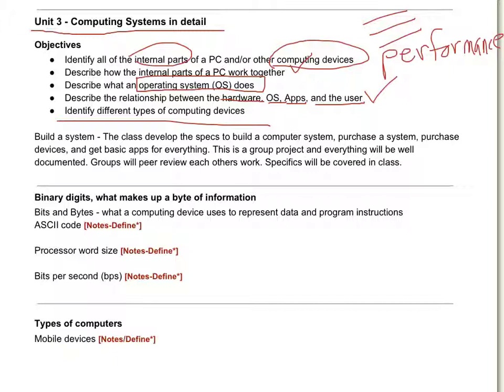The first thing is the ASCII code, the American Standard Code of Information Interchange. If you remember, we've already talked about bits and bytes. Binary digits that represents something in computing. And a lot of times we'll use eight bits to represent one byte.